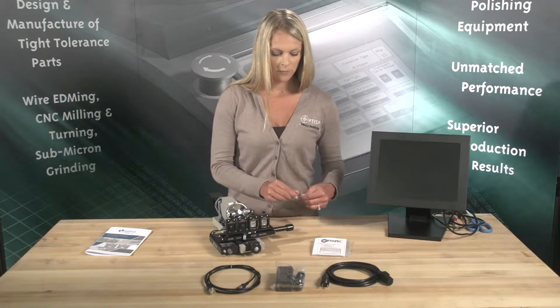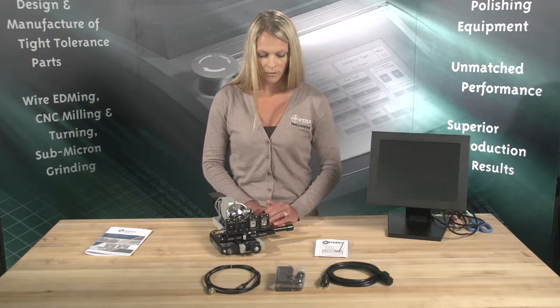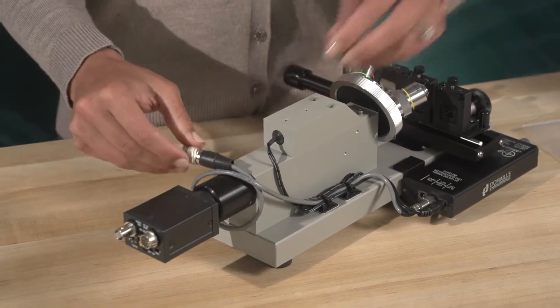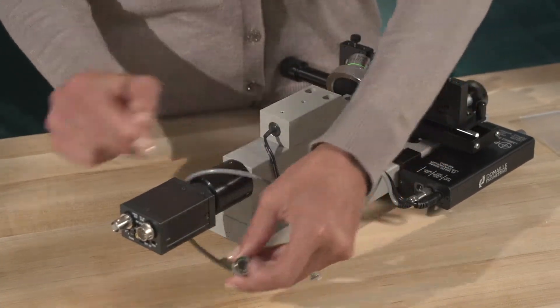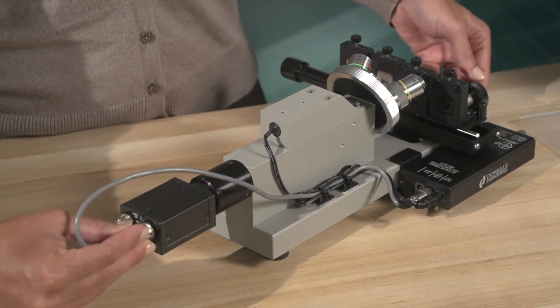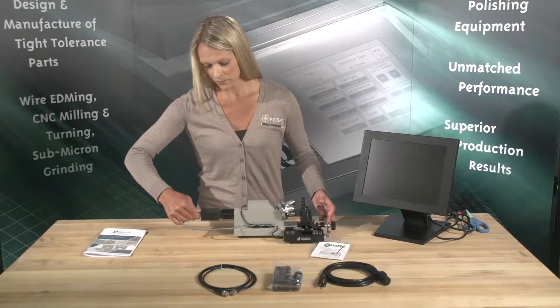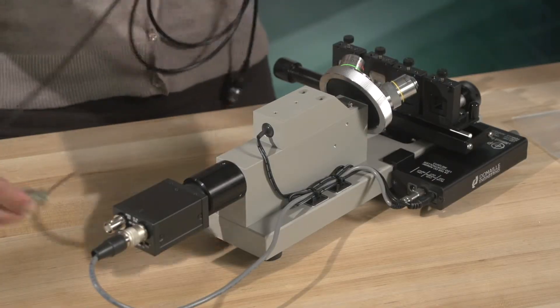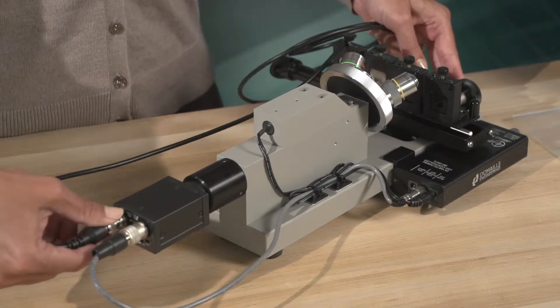Once the adjustment knob has been installed, plug the CCD power cord into the back of the camera. Next, plug in the BNC to the back of the camera, then into the monitor you are using to view the microscope image.